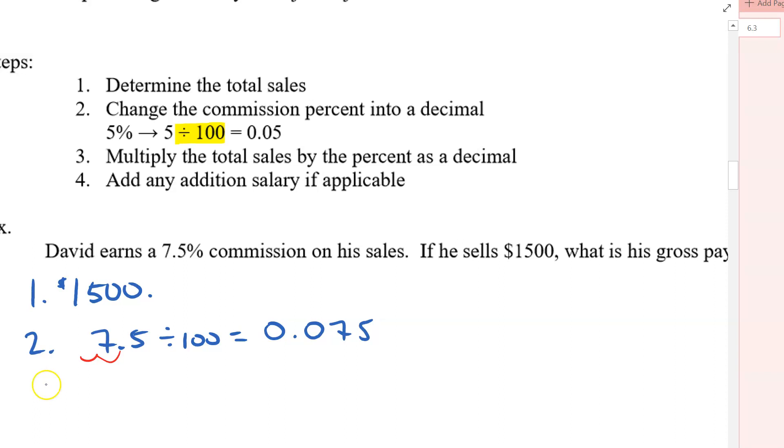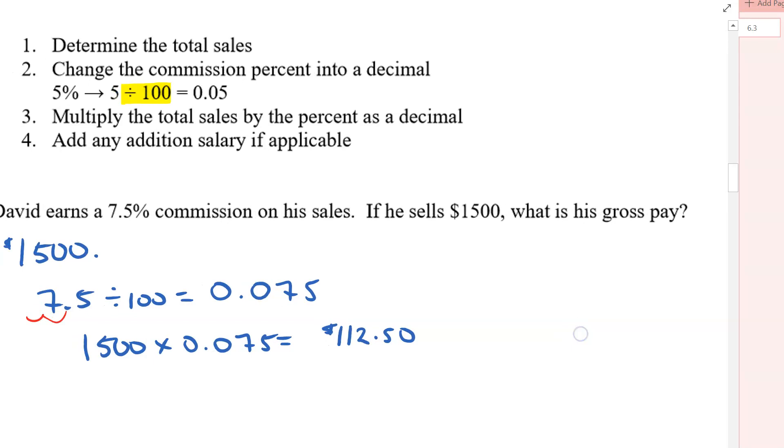And then step number three was multiply the total sales. Total sales was $1,500 times 0.075. And I get the commission, which was $112.50. Add any additional salary if applicable. It doesn't say anything else. So I think that person, David, only gets money from commission. Doesn't get any salary on top of that.